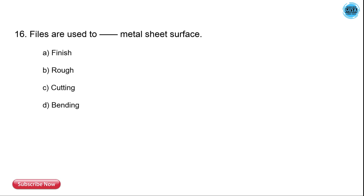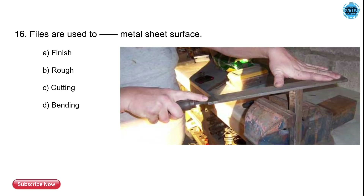The 16th question is: files are used to do what to sheet metal surfaces? The options are finish, rough cut, and bend. The correct answer is finish — files are used for finishing the sheet metal surface.